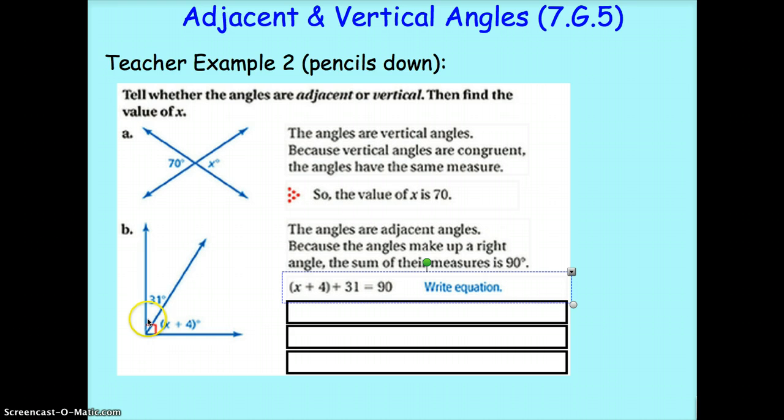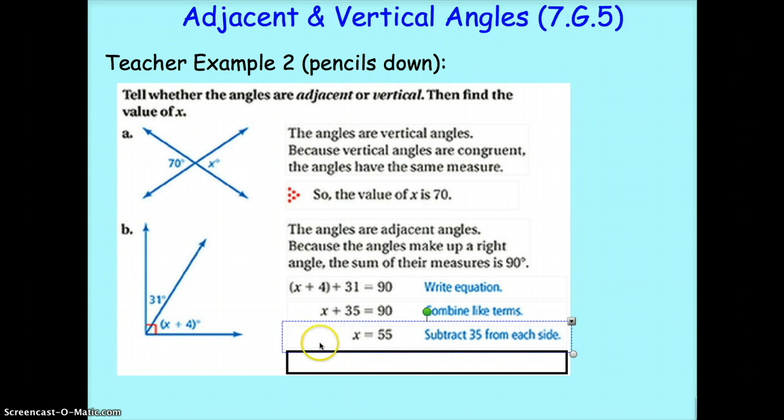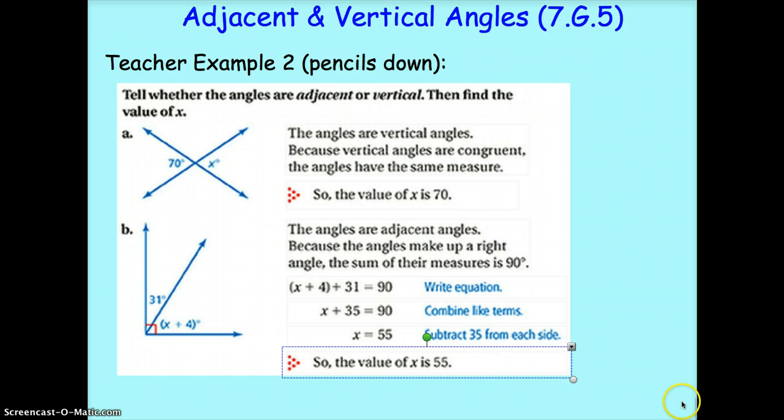Okay. Now, using our inverse operations that you learned in the beginning of the year, we're going to start subtracting, taking things away so we can get X by itself. So we can start by combining 4 plus 31 and getting 35. Then subtracting 35 from both sides of the equation, we end up with X equals 55. So that means X must be 55.